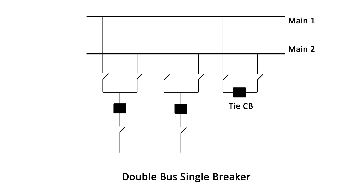Number 4. Double bus, single breaker. Substations utilizing the double bus, single breaker configuration are supplied with two buses. Each circuit is equipped with a single breaker and is connected to both buses using isolators.